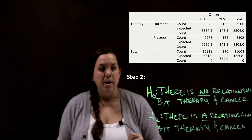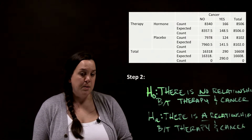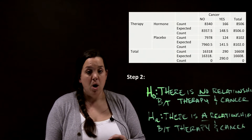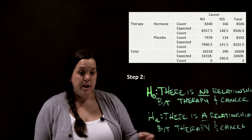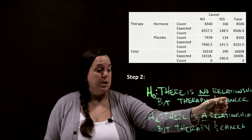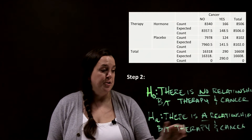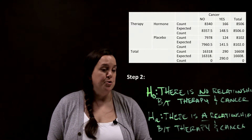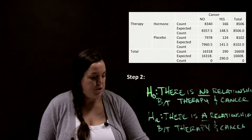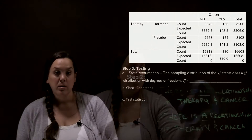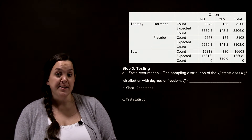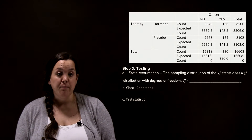Unlike the hypothesis tests we've been looking at in the past, here we have no null value and no parameter that we're defining. In this type of hypothesis test we want to see if there is a relationship, so our alternative is that there is a relationship between our two variables, whereas the null will be there is no relationship.